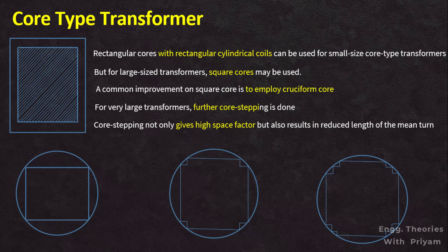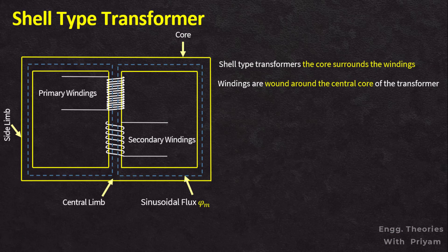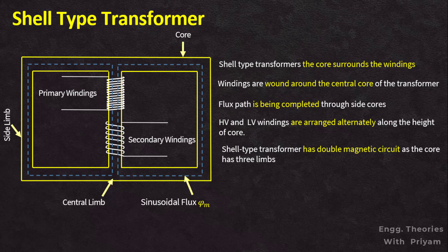The three-stepped core is the most commonly used, although more-stepped cores may be used for very large transformers. In the shell type transformer, the core surrounds the windings, and the windings are wound around the central core. The flux path is completed through the side cores. High voltage and low voltage windings are divided into a number of coils and arranged alternately along the height of the core. The shell type transformer has a double magnetic circuit as the core has three limbs.